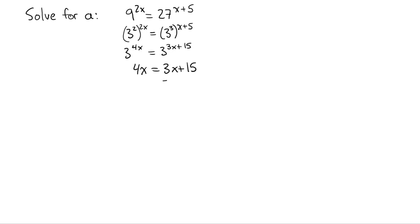And so now I can subtract 3x from both sides. Whatever you do to one side, you have to do the other. That gets me x on the left side, and then I'm just left with 15 on the right side. And that is my final answer. x is equal to 15.